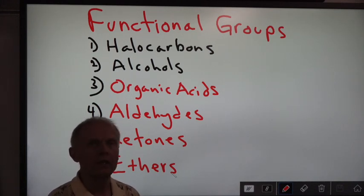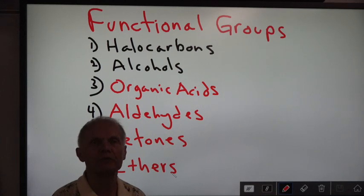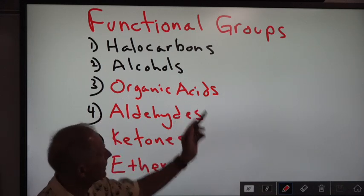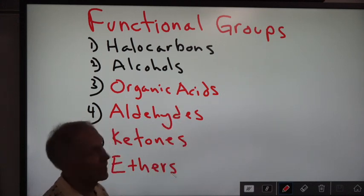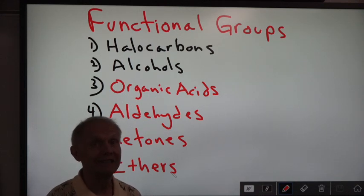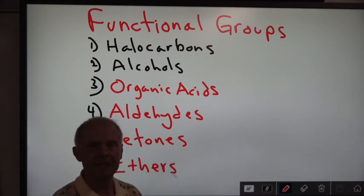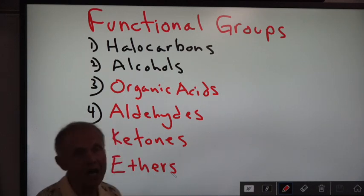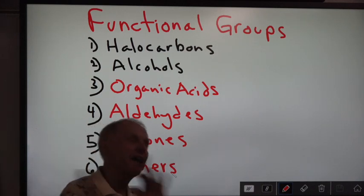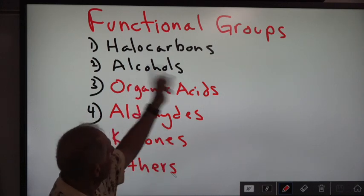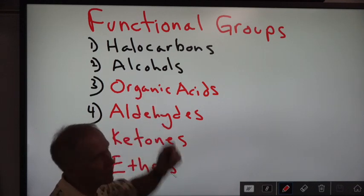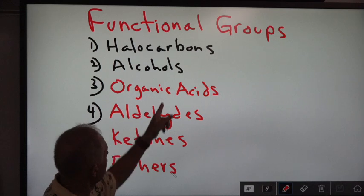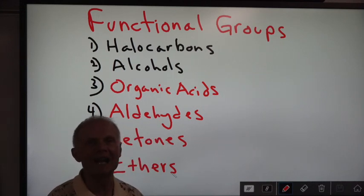Now we are going to go over two, possibly three more functional groups for this video. The first is organic acids. The big deal about organic acids is that COOH has to come at the end — it can't be anywhere else. And for aldehydes, the functional group also has to be at the end. So halocarbons and alcohols can go anywhere, but organic acids and aldehydes must be at the end.